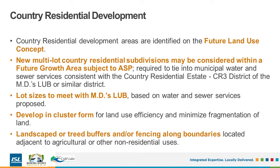Now let's look at country residential policies. Any country residential area located in a future growth area will transition to city residential development if it is annexed. New country residential subdivision may be considered in a future growth area, provided that an ASP is prepared by the developer and that it be connected to municipal water and sewer services as required in the MD's country residential estate district. Lot sizes need to meet the MD's requirements based on the water and sewer services that are proposed. These subdivisions are to be laid out in a cluster form in the interests of land use efficiency and minimizing the fragmentation of land. Lastly, landscaping, buffers, and/or fencing will be required along lot boundaries located adjacent to agricultural or non-residential uses.